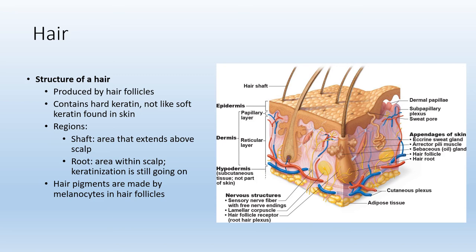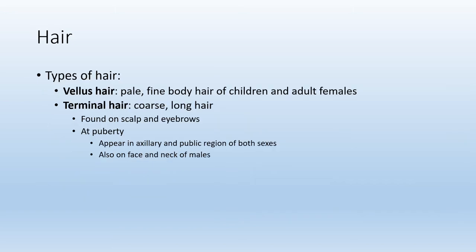There are truly only three hair pigments across the human population: black, brown, and blonde. There are two types of hair found across the human body — vellus hair and terminal hair. Vellus hair is more common; it's pale and fine, found along the abdomen, the arms, and the legs. Terminal hair is found on your head or scalp, and also comprises your eyebrows — it's more coarse or typically longer than vellus hair. At puberty, terminal hair will appear in the axillary region and also in the pubic region of both males and females.